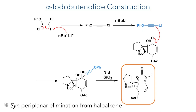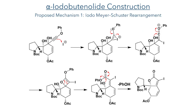The next stage of the synthesis was to construct the iodobutenolide ring. Phenoxydichloroethane was reacted with BuLi first to promote a syn-periplanar elimination to form an alkyne, and then again to deprotonate this alkyne to produce a nucleophile which underwent direct addition to the carbonyl centre. A cyclisation occurred upon treatment with N-iodosuccinimide and silica to produce the target butenolide. The authors proposed two possible mechanisms: the first is an iodine-promoted Meyer-Schuster rearrangement, involving the activation of the aryl enol ether by iodonium to generate a ketinium intermediate, which then forms a cyclobutene with the geminal hydroxy group, undergoing a retro-2+2 ring opening to produce an alpha-beta unsaturated ester, followed by transesterification with the alpha-hydroxyl group to form the butenolide ring.